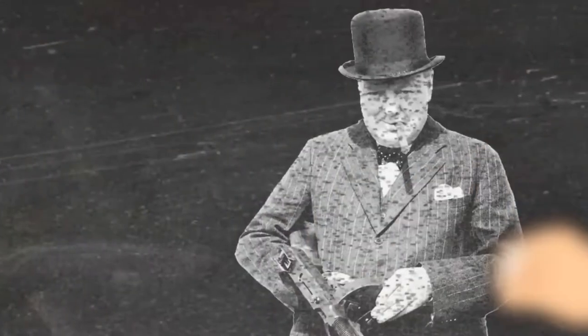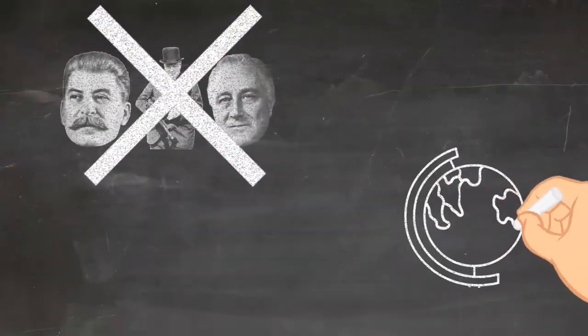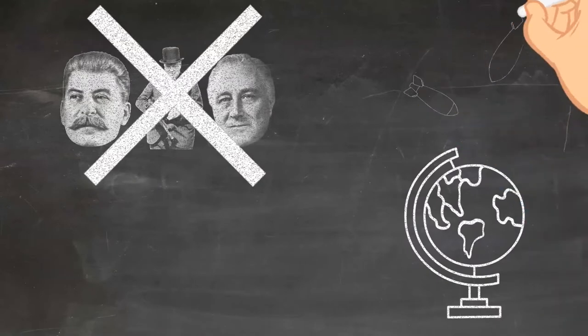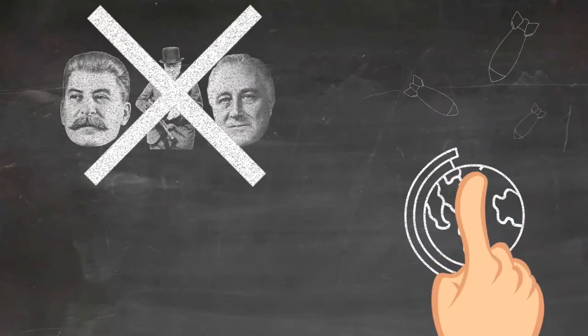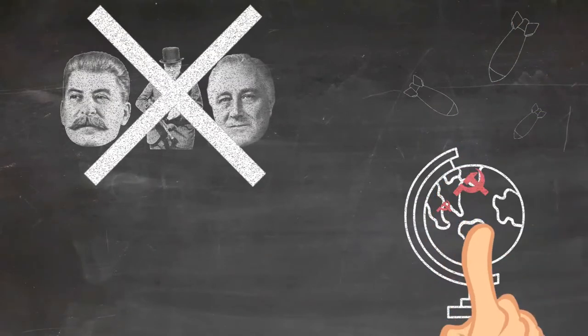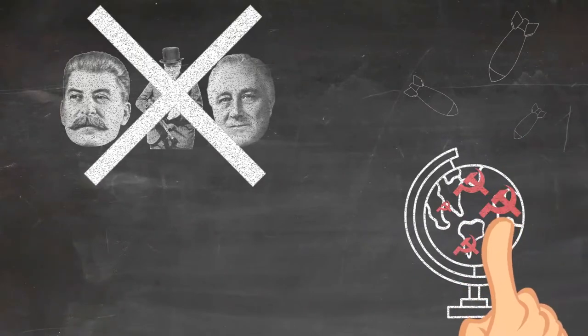Even before the Grand Alliance collapsed and the Cold War began, the U.S. was concerned at the threat posed by the spreading of communism around the globe. The destruction of World War II had created conditions that, according to the U.S., were a perfect breeding ground for communism.